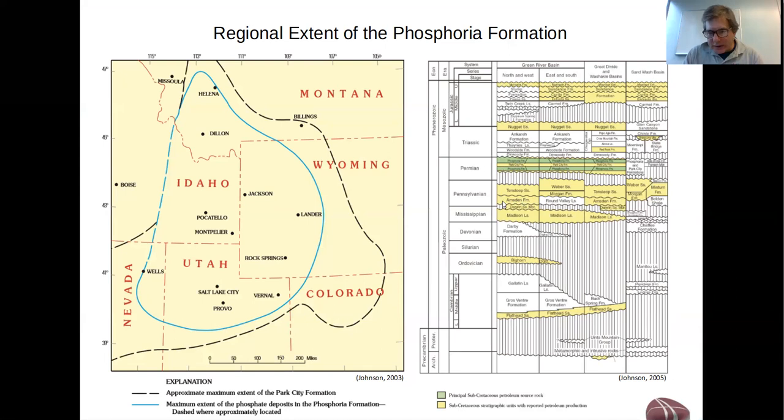The two green highlights show the two organic-rich parts of the phosphoria that have produced this oil. These are two members. The lower is called the Mead Peak member, and the upper member is called the Retort member, and we'll cover these in much more detail as we go on.